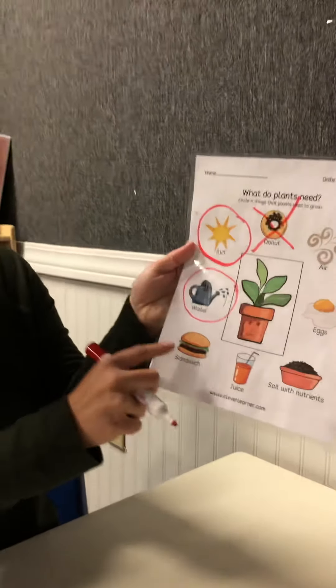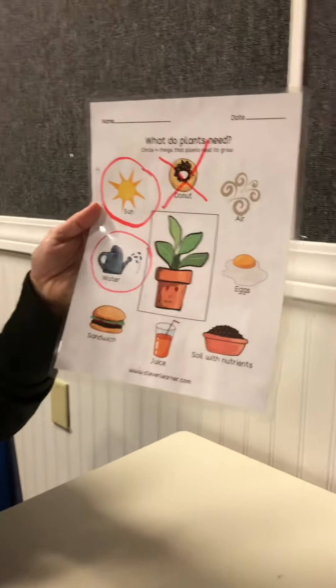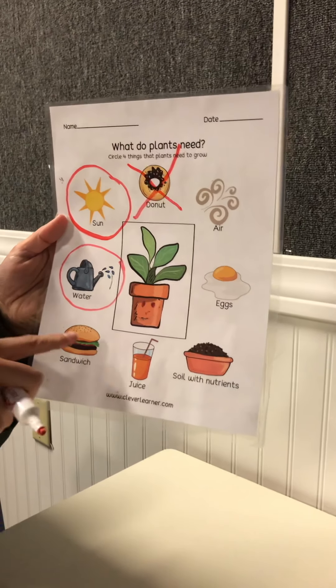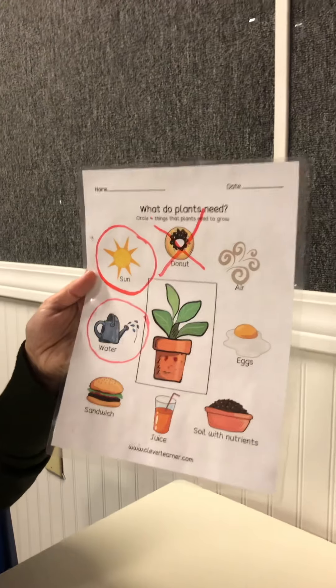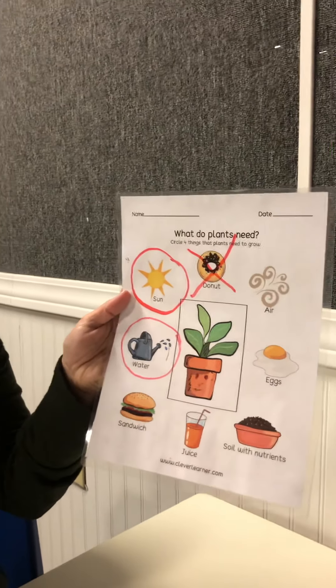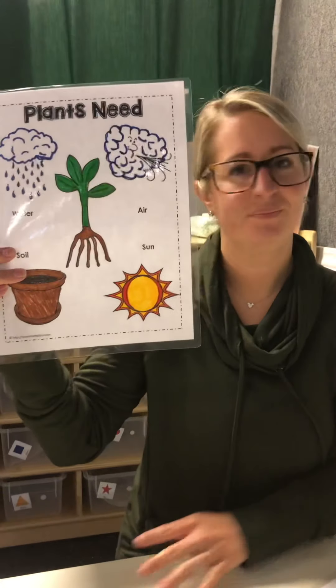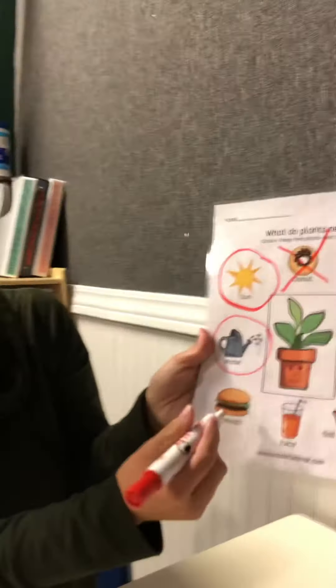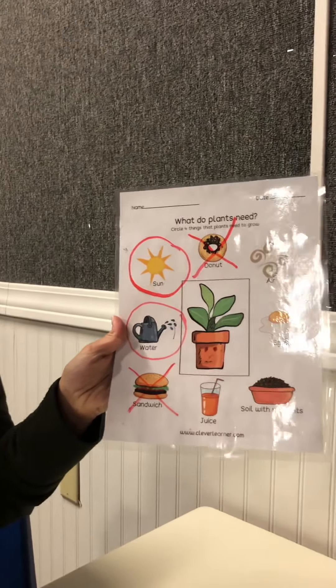Look at our next one — it's a cheeseburger! Does a plant need a burger to grow? Is a burger one of the four things a plant needs? No. Plants can't eat burgers and they don't need them. So we're going to put a big X over the burger.